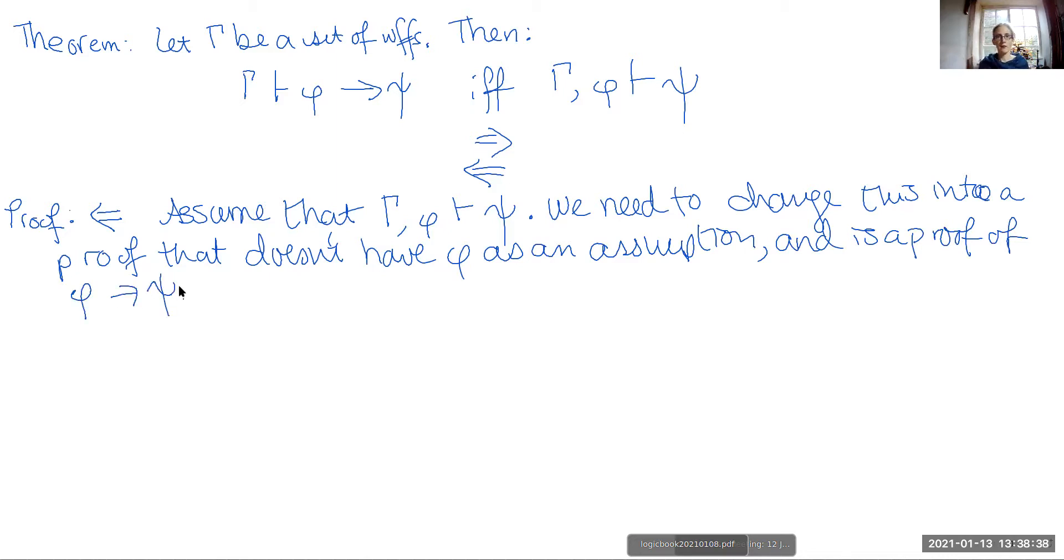Now think about this in ordinary proof terms. If what we want to prove is a conditional, what do we need? We need to have the assumption of the antecedent, a derivation of the consequent, and then we can take that sub proof, close it off, discharge the assumption, and introduce a new conditional.